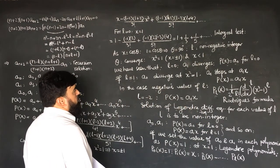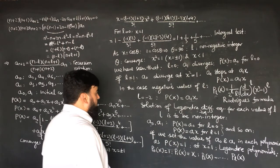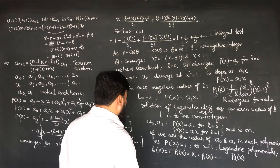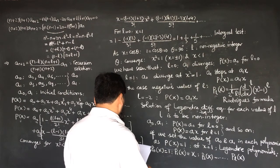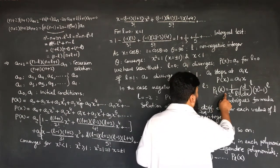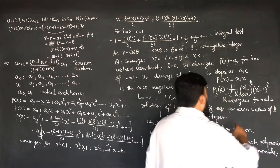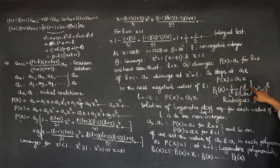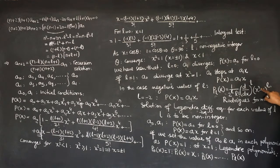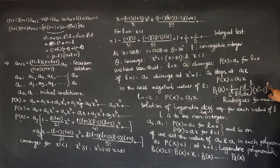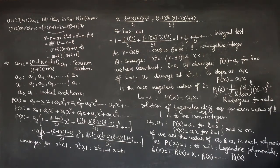All the Legendre Polynomials, being solutions of the Legendre Differential Equation, can be calculated from the Rodrigues formula. Here the derivative order is l and the power is l, so differentiating (x^2 - 1)^l — which is x to the power 2l — will give a polynomial containing a variable term as well.